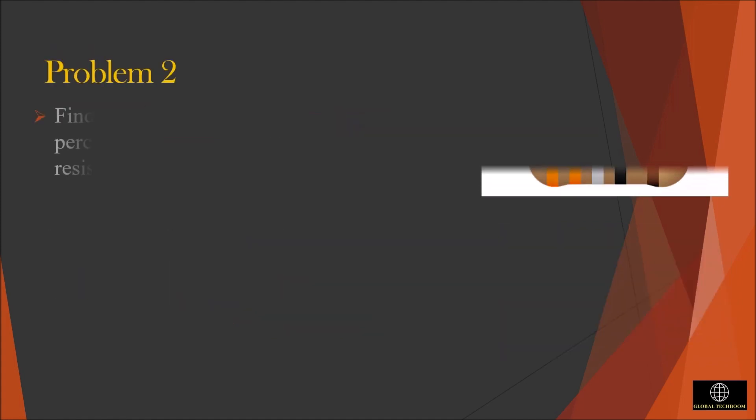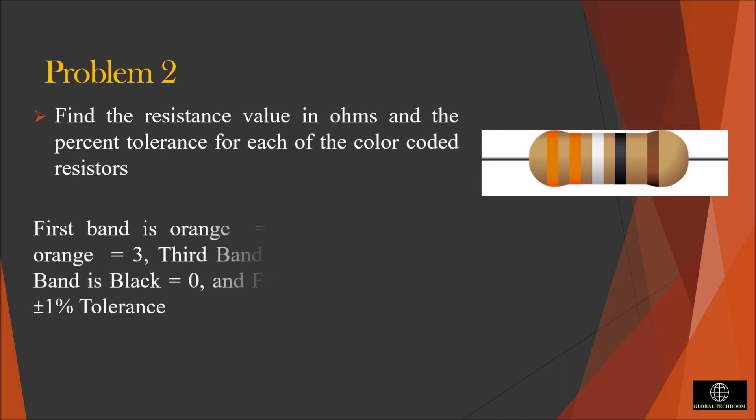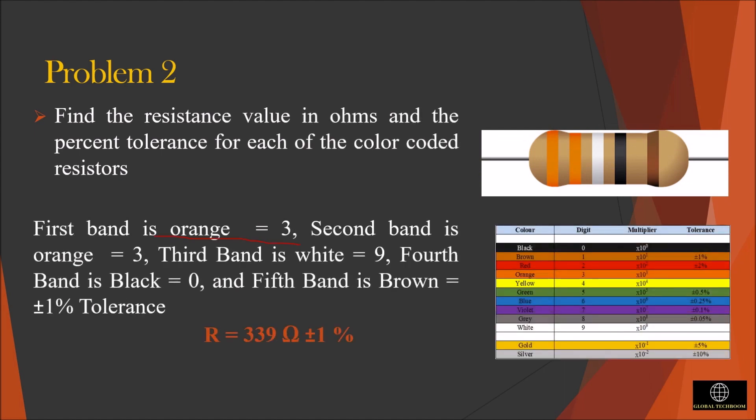In the next problem, from the figure, we can say that the first band is orange so the value is 3. The second band is also orange so it is 3. The third band is white and we can say that the value is 9, and the fourth band is black and the value of black is 0 so there is no multiplying factor. The fifth band is brown so the tolerance value will be 1%. So the resistance value becomes 339 ohm with a tolerance of 1%.